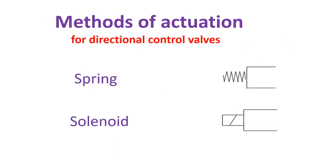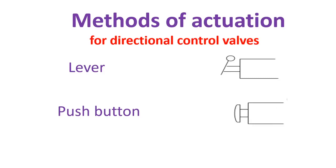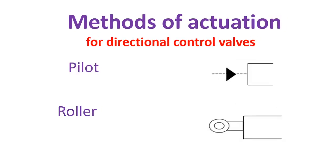The next topic is the method of actuation for directional control valves. The symbols shown include: spring, solenoid, lever, push button, pilot, and roller.